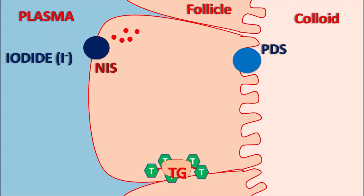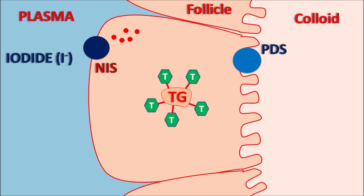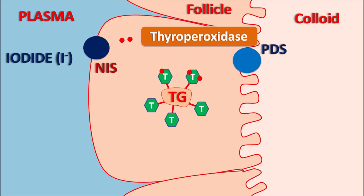Within the thyroid follicle, thyroglobulin is present, which is attached to tyrosine residues. These tyrosine residues can be iodinated by iodide — either one iodide molecule attaches to one tyrosine residue, or two iodide molecules attach to one tyrosine residue. This reaction is mediated by the thyroperoxidase enzyme, which is responsible for iodination of tyrosine residues in the presence of hydrogen peroxide, forming mono-iodinated tyrosine (MIT) or di-iodinated tyrosine (DIT) residues.